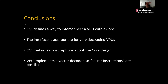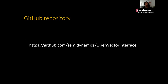To reiterate: this interface is especially suited to have a core very decoupled from the VPU. The OVI does not make many assumptions about the core design or the VPU, although it assumes that the VPU implements a decoder. Thanks to this, you can have instructions that the core doesn't know about, or you can add new instructions without modifying the core at all. You can find this specification at the provided link, and if you have any questions or thoughts, please feel free to ask. Thank you very much.